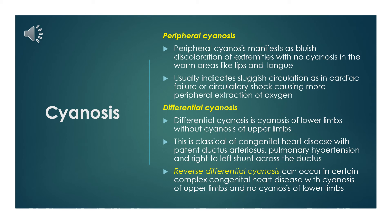Differential cyanosis is cyanosis of the lower limbs without cyanosis of the upper limbs. This is a classical feature of congenital heart disease with patent ductus arteriosus, pulmonary hypertension, and right-to-left shunt across the ductus.